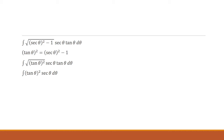So we'll have tangent times secant times tangent — two factors of tangent giving us tangent squared. We'll substitute tangent squared equals secant squared minus 1, and distribute out the secant, giving us secant cubed minus secant, d theta.